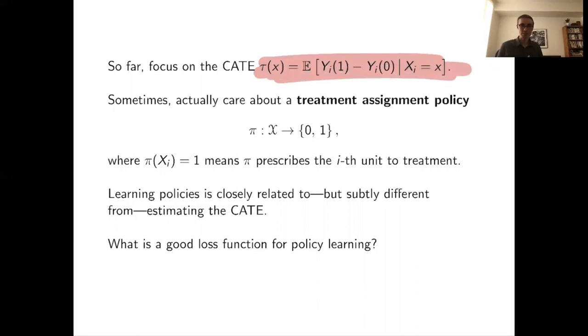Policy learning is a problem in the same setup, except instead of asking what the conditional average treatment effect looks like, instead of describing the treatment effect function, policy learning asks you to be prescriptive, to actually make recommendations about who should be treated and who should not be treated. Specifically, a treatment assignment policy π is a mapping from your feature space x to a recommendation 0 or 1. The problem of policy learning is to use data to find a good policy of this type.